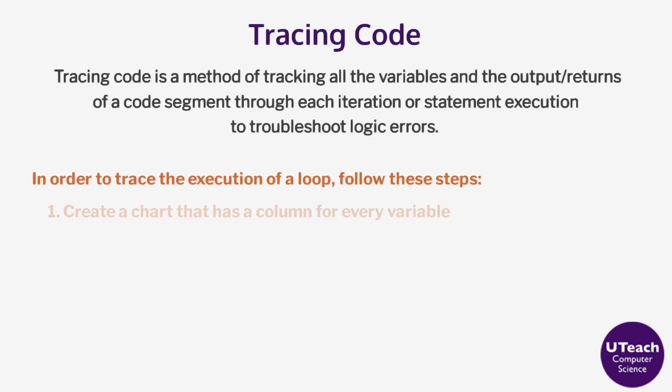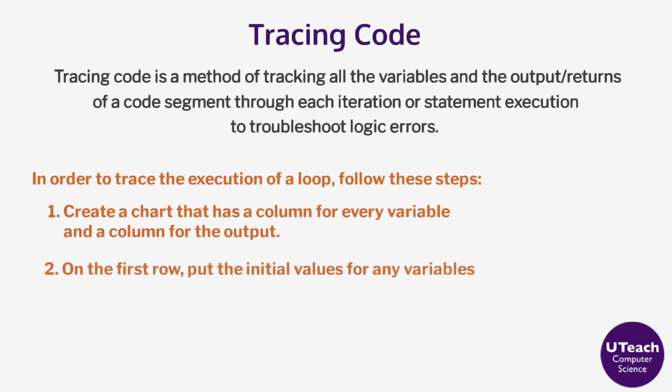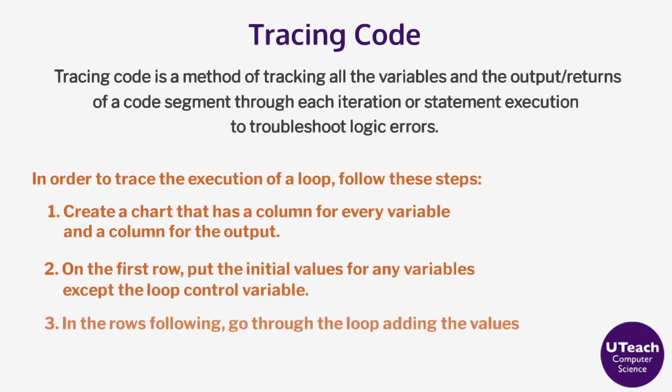Step 1: Create a chart that has a column for every variable and a column for the output. Step 2: On the first row, put the initial values for any variables except the loop control variable. Step 3: In the rows following, go through the loop adding the values for each variable for each iteration. There may or may not be output with each iteration, and there may or may not be output after the loop.